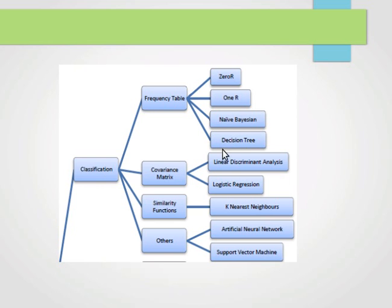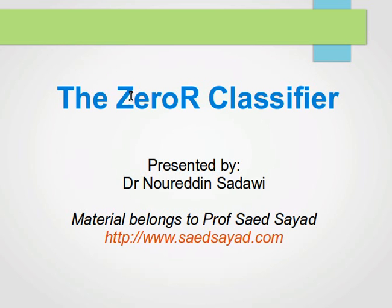The Naive Bayes and the decision tree classifiers. Now the ZeroR classifier, if you just look at the name, zero R stands for zero rules. What that means is...